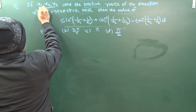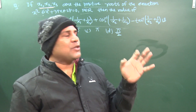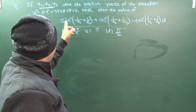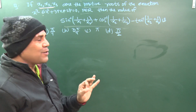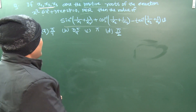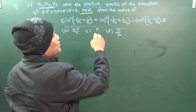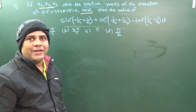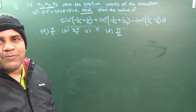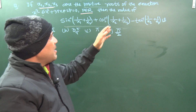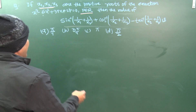If x1, x2, x3 are the positive roots of the equation x³ - 6x² + 3px - 2p = 0, where p is an element of ℝ, then find the value of sin⁻¹(1/x1 + 1/x2) + cos⁻¹(1/x2 + 1/x3) - tan⁻¹(1/x3 + 1/x1).